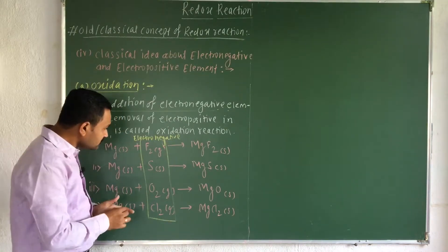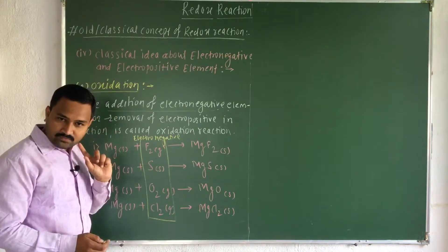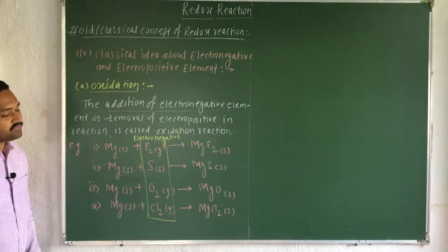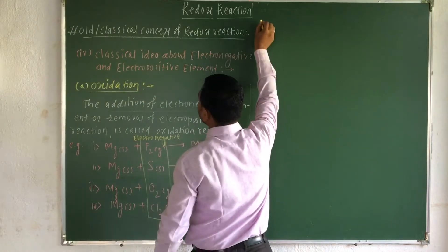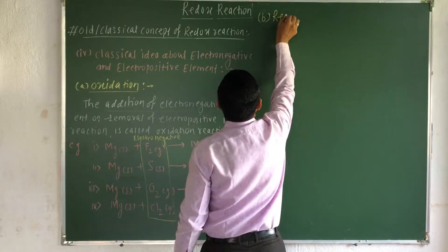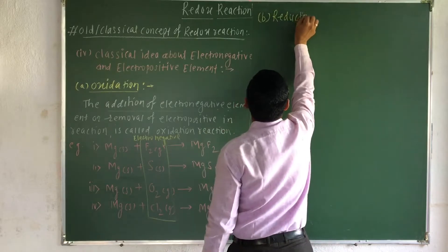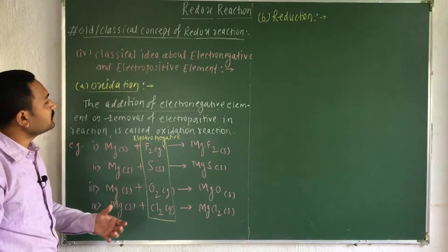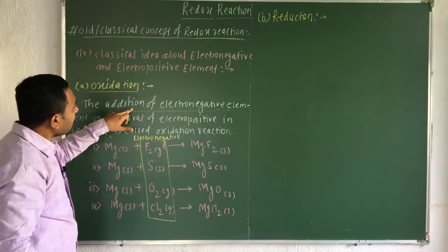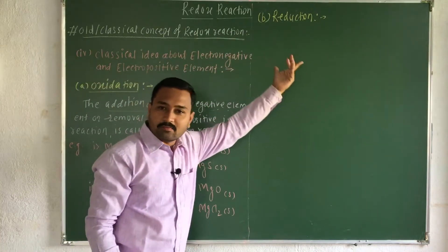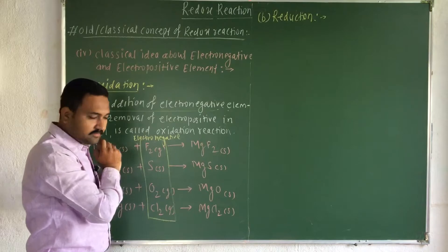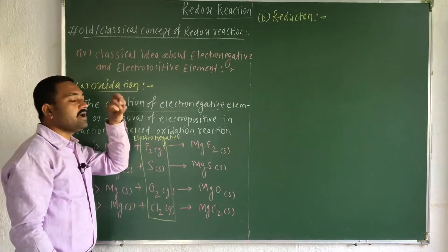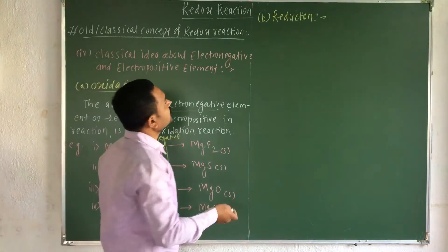The importance of this concept is that we are not restricted to the oxygen atom alone — we are using different electronegative elements. That is why this process is called an oxidation process. Now let us define the reduction process. This is exactly opposite to oxidation: removal of an electronegative element or addition of an electropositive element.